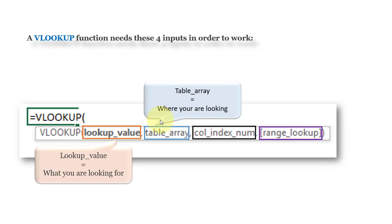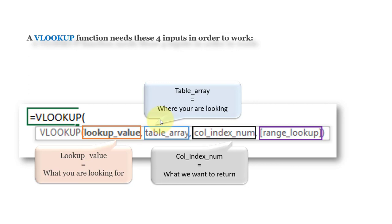The table array goes to the right. Any column that exists before or to the left side of the lookup value column will be out of scope for this function. Column index number is what we want to return — it is the column number from where we want to retrieve the corresponding value.